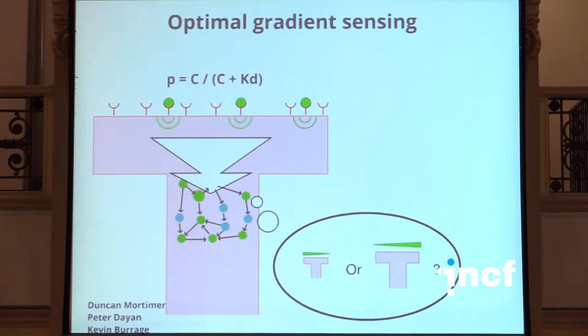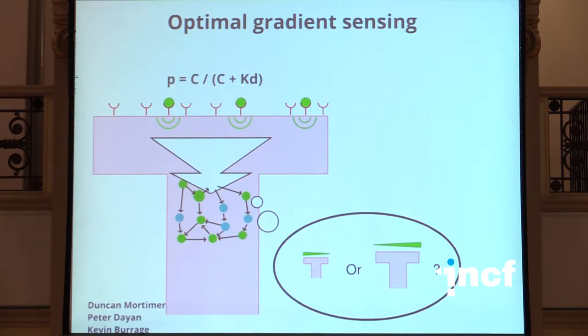The binding of ligand molecules to receptors is a fundamentally stochastic process — it's only the probability of binding which is determined by the external concentration. Using standard Michaelis-Menten kinetics, the probability of a receptor being bound is the concentration divided by the concentration plus the dissociation constant. Each time we look at this array of receptors there will be a different set bound. So, given these continual fluctuations and this sensory uncertainty, how can we best decide which way the gradient points?